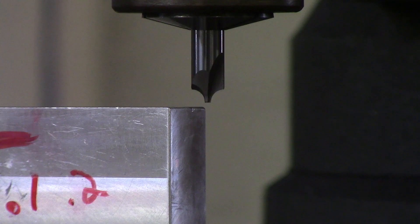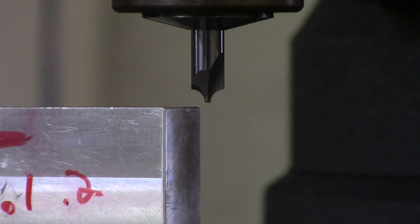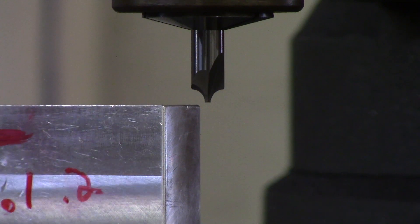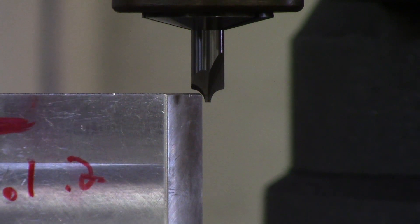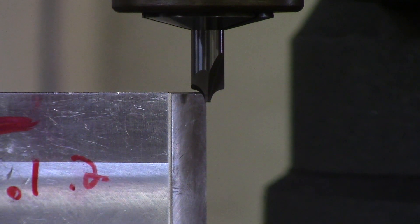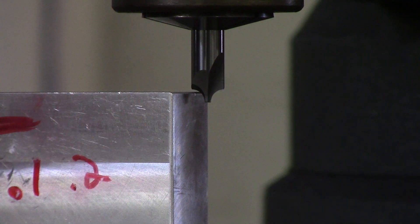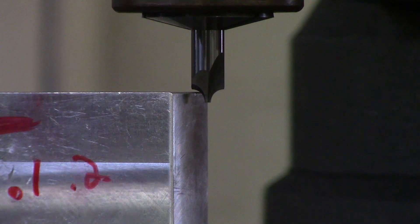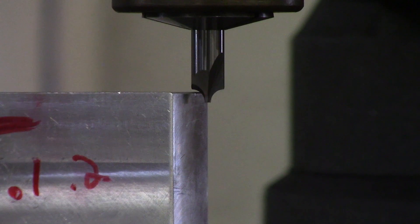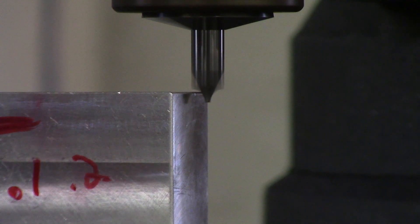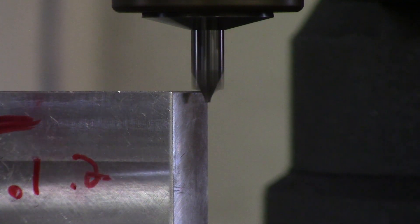Now I'm going to move away from my part and we're going to touch the top of the radius. So again, we're going to get close to our part before we turn the spindle on. We're going to turn our spindle on and move up with our knee until it touches our part.